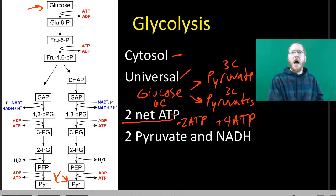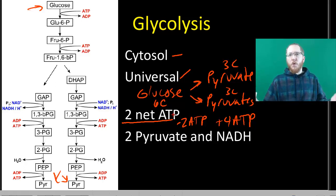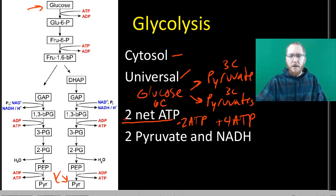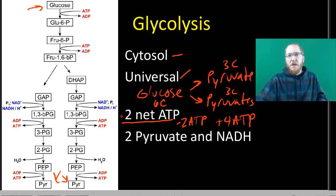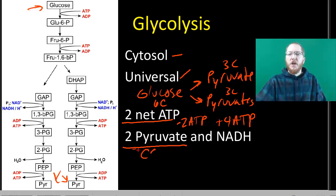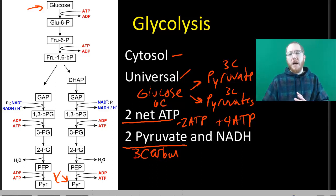Overall we have two net ATP — we spent two dollars but got four in return, so we're up by two. If you're doing anaerobic respiration, then you're done; two ATP is all you get. But if you're doing aerobic, we still have those two pyruvate molecules with three carbons each, so they still have plenty of energy in them and we can extract more later on.